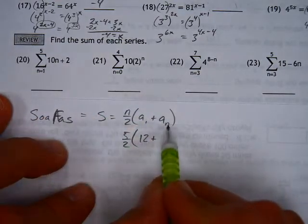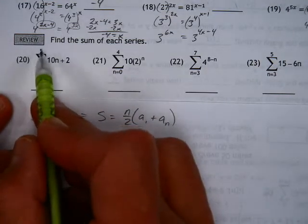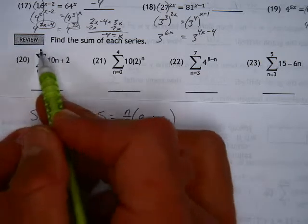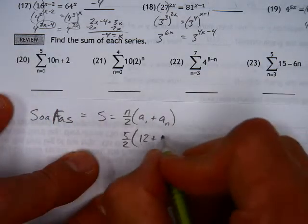To get the last term, a sub n generically means the last term, and we'll get the last one by plugging 5 into the equation. Plug in 5, you've got a 50 plus 2, 52.